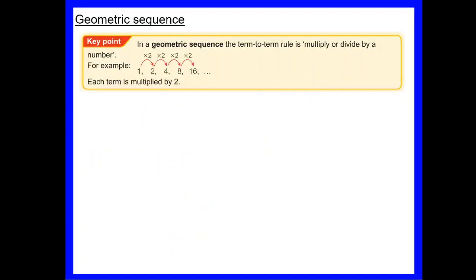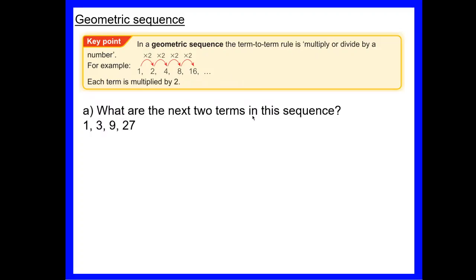Now we're going to look at geometric sequences. In contrast to arithmetic, a geometric sequence goes up or down by multiplying or dividing by a number. In the example: to get from 1 to 2 we multiply by 2, from 2 to 4 multiply by 2, from 4 to 8, then 8 to 16. The rule is multiply by 2, so it's a geometric sequence.